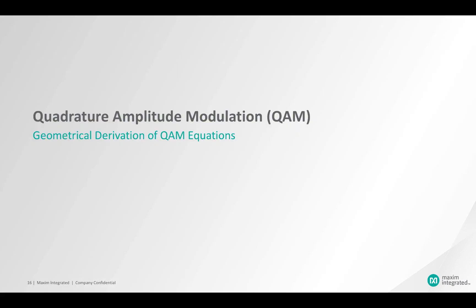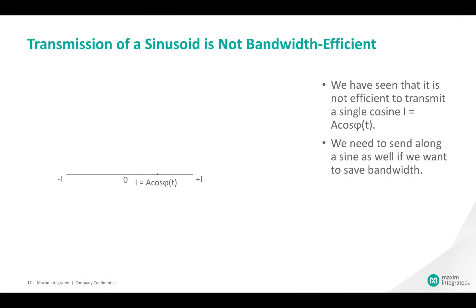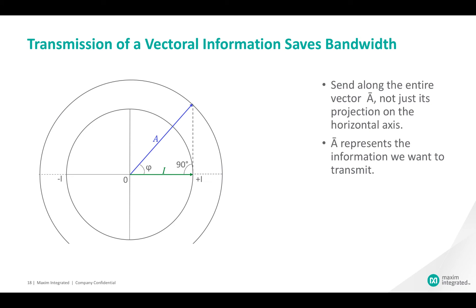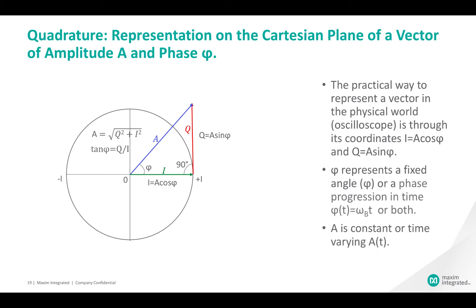Now we'll derive the QAM equations geometrically and then generalize them. We have seen that it is not efficient to transmit a single cosine, i = a·cosφ(t). We need to send along a sine as well if we want to save bandwidth. We can achieve this if we send along the entire vector, not just its projection i on the horizontal axis. The practical way to represent a vector in the physical world, such as on an oscilloscope, is through its coordinates on the Cartesian plane. i, which equals a·cosφ, is the in-phase component.